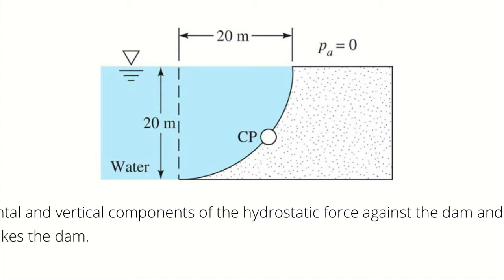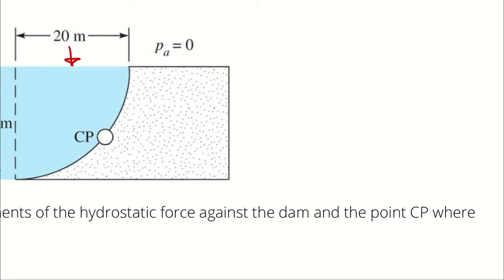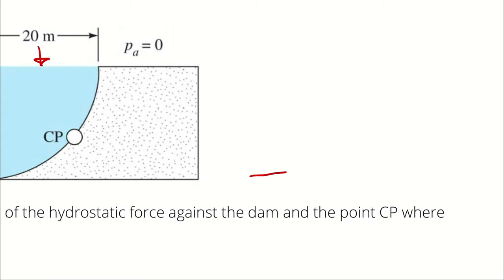We don't have any good way to figure out what the relevant moments of inertia would be. So instead, we break this into two chunks. Instead of figuring out the force acting on the dam all at once, we figure out its vertical component and its horizontal component. The vertical component is easy.